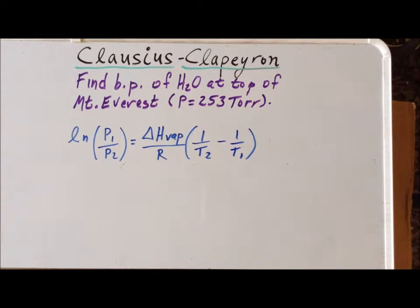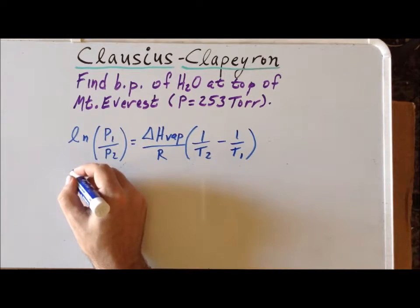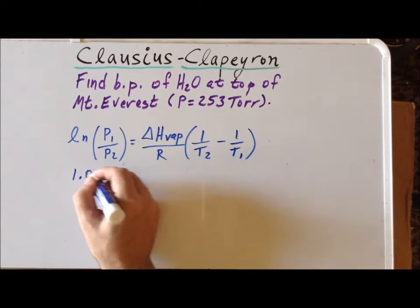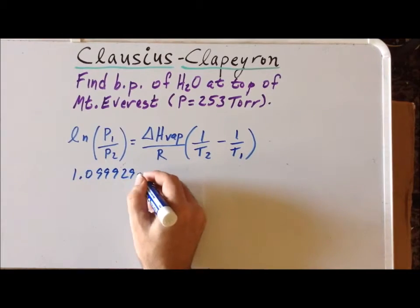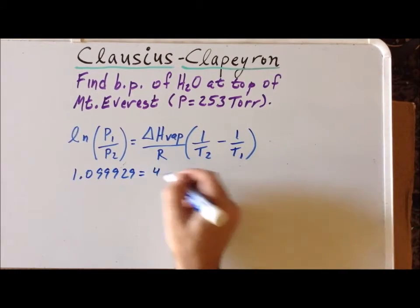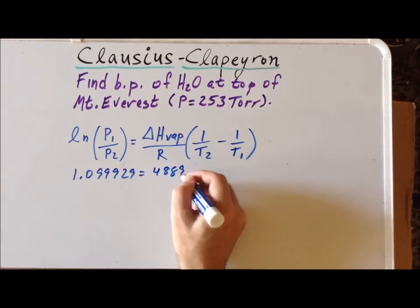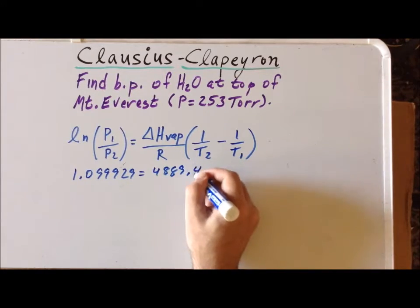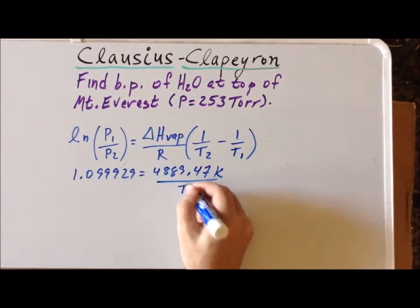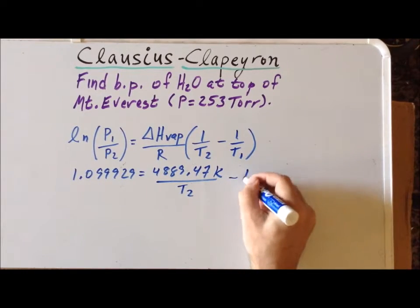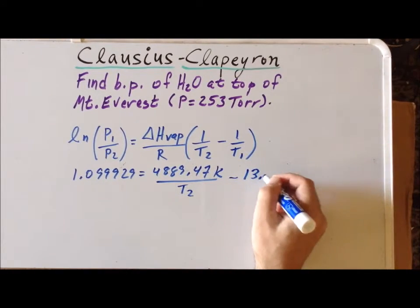Dividing through the right-hand side, now we get 1.099929 equals 4,889.47 Kelvin divided by T₂ minus 13.108.